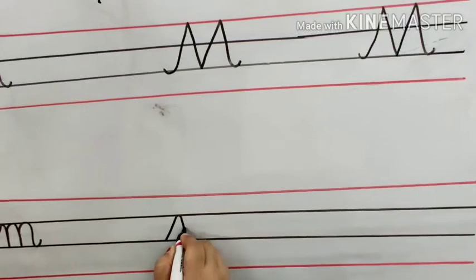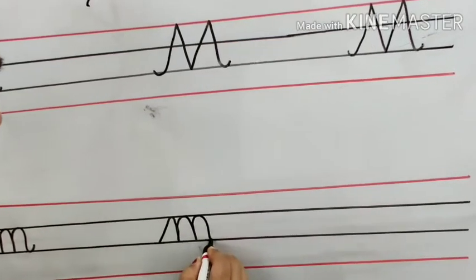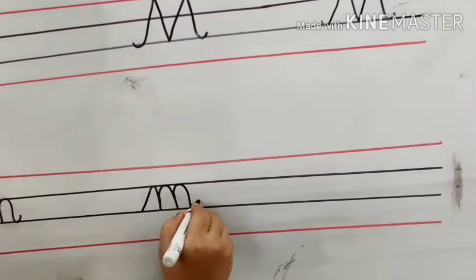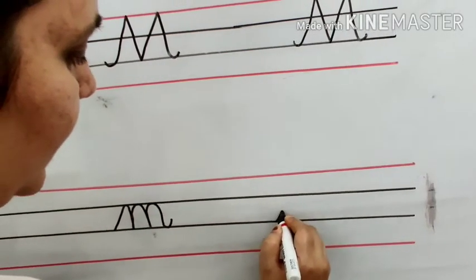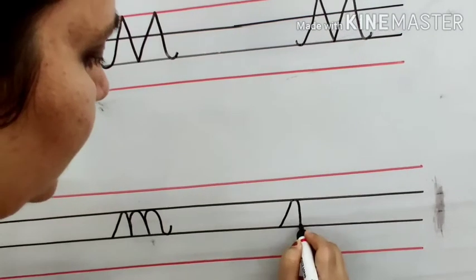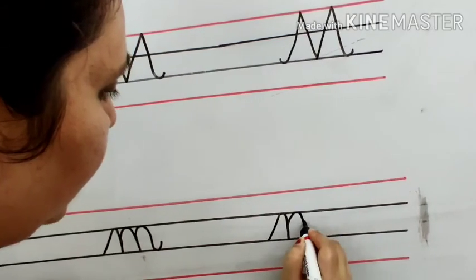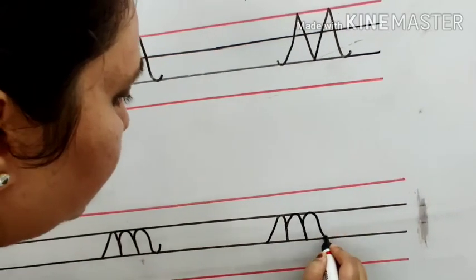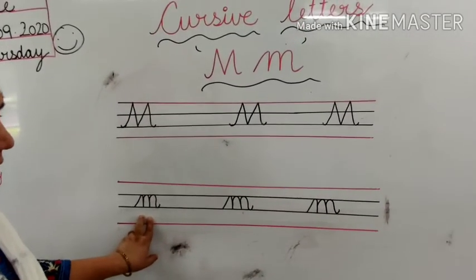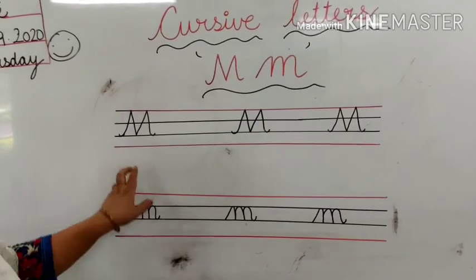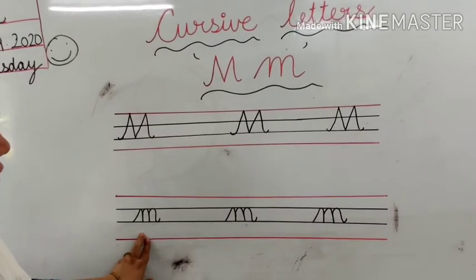Draw a curve, again a curve. This is called small cursive M. Capital cursive M and small cursive M — M says M. Clear children. Practice at home. Thank you.